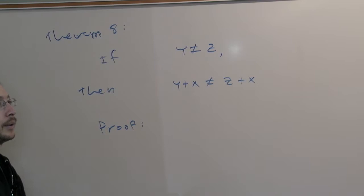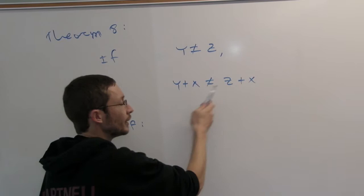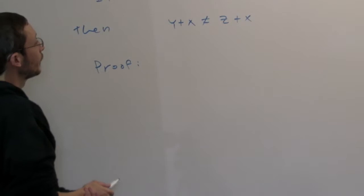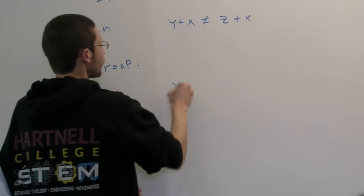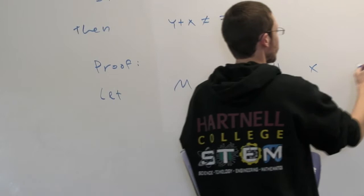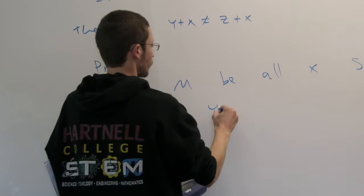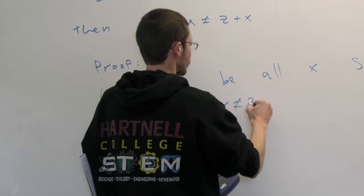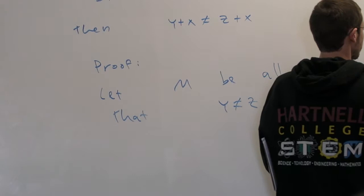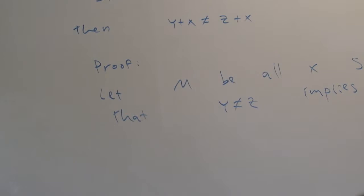Anything like this — even if it doesn't necessarily look like induction — where you're trying to prove something for all natural numbers, your go-to thought should be: how can I get axiom five in here? All that we do is let x be such that this property holds. Let m be all the x's where, starting with an inequality, addition by the same number maintains that inequality.